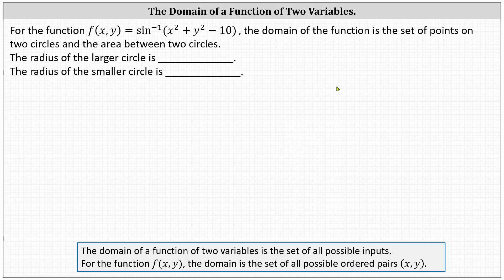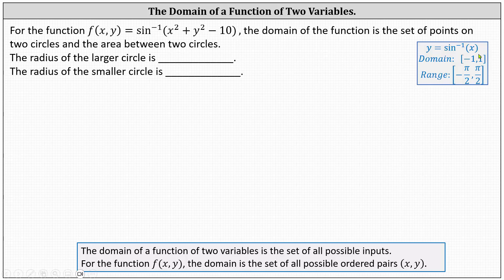Remember, when we have a function of one variable involving the inverse sine function — for example, y = arcsin(x) — the domain, or set of all possible x values, are all the possible sine function values, giving the closed interval from -1 to 1. The range, or possible y values, are the angles in the closed interval from -π/2 to π/2.